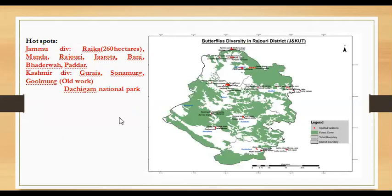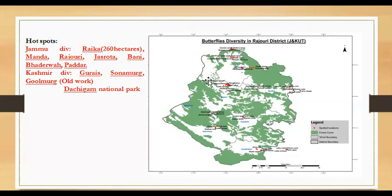I would like to show the spots in Jammu and Kashmir which we can visit, as they have rich butterfly fauna. I have shown a Google Map of butterflies in Rajouri district where the green forest cover is abundant in butterfly species. Many rare or endemic species are found in these areas. Rajouri district is a very good hotspot for visitors wishing to see all types of Jammu butterflies.